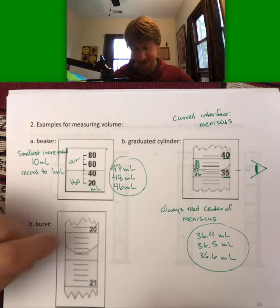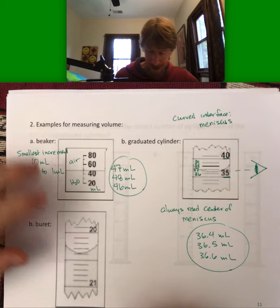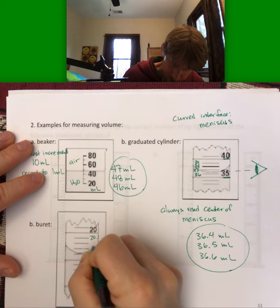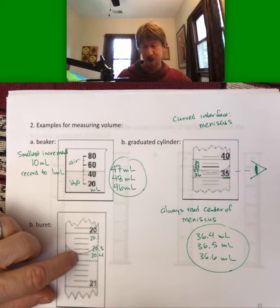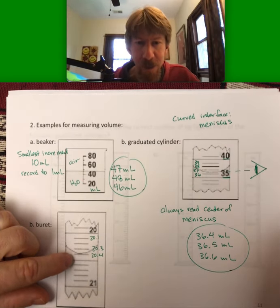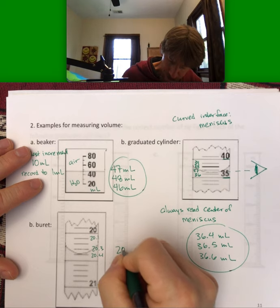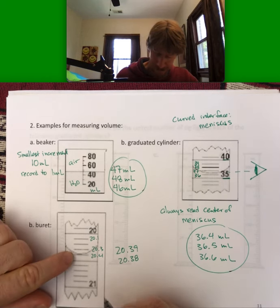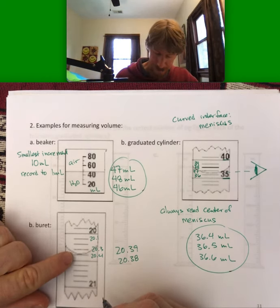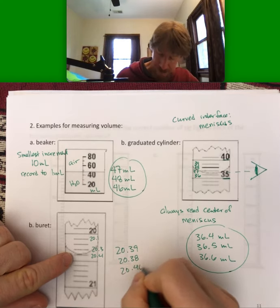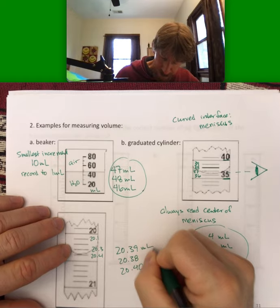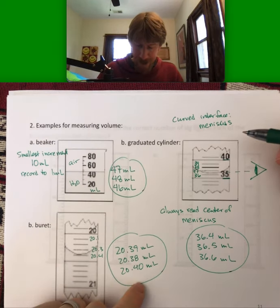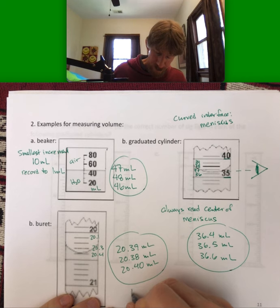Here, what's tricky about burettes is the 20 is up here and the 21 is down here. So as we go, it's going to be 20.1, 20.4, 20.3. It's between 20.4 and 20.3, almost all the way to 20.4. So I might call this 20.39, 20.38. It does look like it's above the 20.4 mark, but I would give you 20.40 as well.